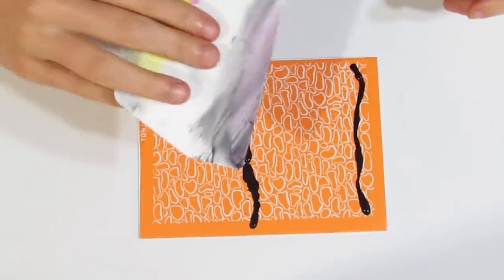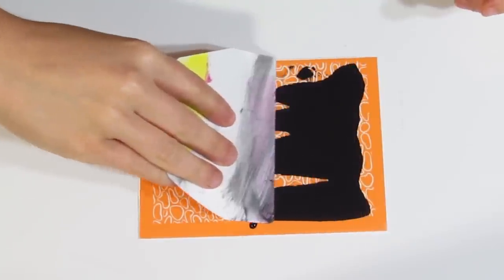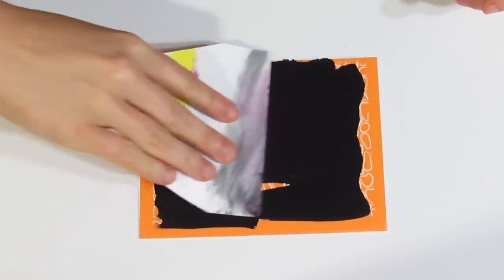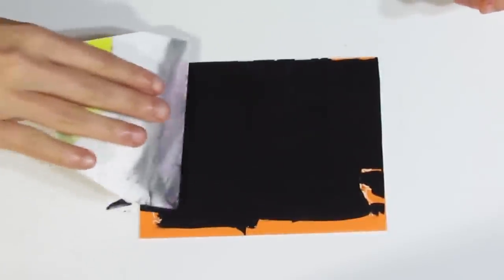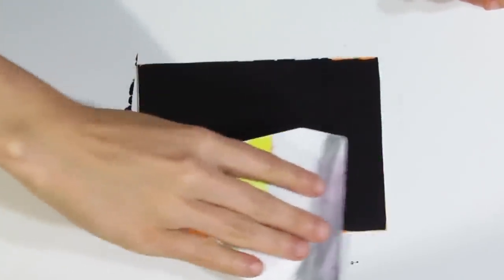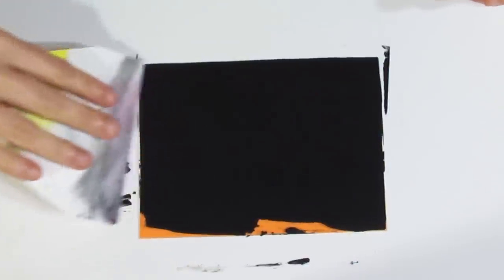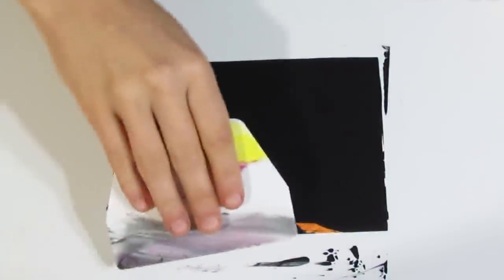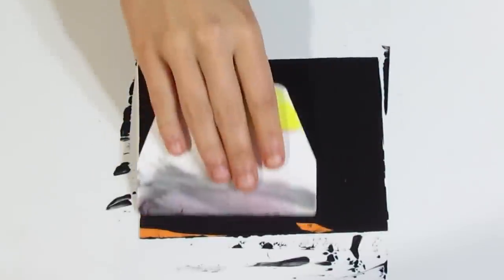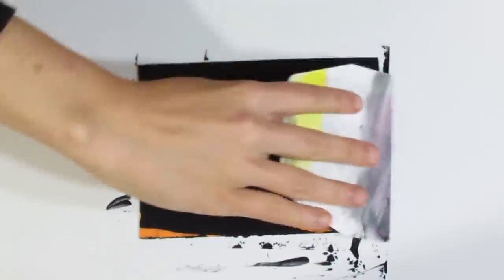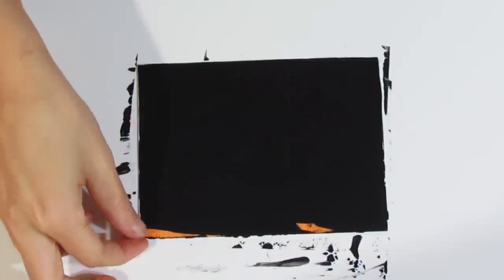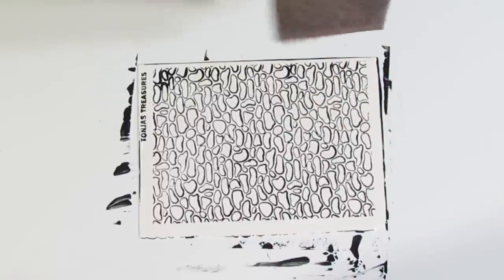And grab a scraper of some kind. And use it to scrape that paint through your screen. Just making sure that I get a nice even coat. Then we're going to put that silkscreen into some lukewarm water to clean it off.